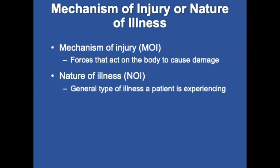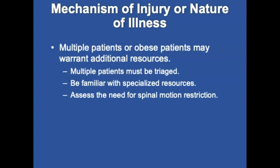The mechanism of injury, or MOI, is the way the traumatic injury occurred — the forces that act on the body to cause damage. It can help you predict the likelihood of certain injuries and estimate their severity. The nature of illness is the general type of illness a patient is experiencing. If there's more than one patient, or if the patient is obese, you may need additional resources. If multiple patients have similar complaints, consider carbon monoxide poisoning, contact with a noxious agent, or food poisoning. Multiple patients must be triaged. Listen for clues in dispatch information, and activating law enforcement or the Incident Command System may be necessary.